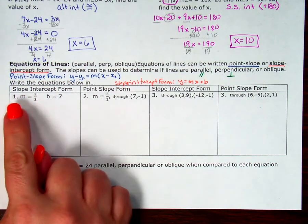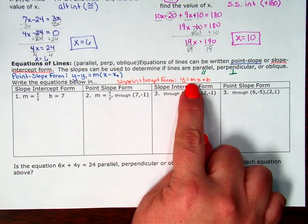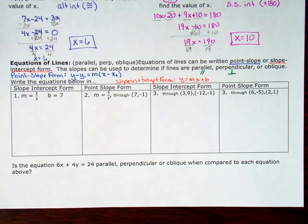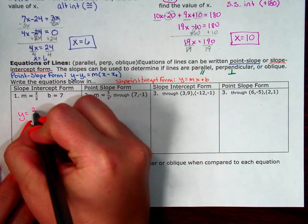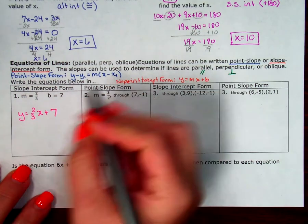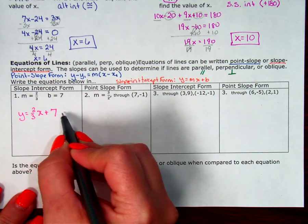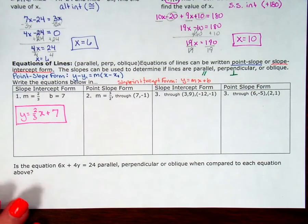For number one, they want me to write this in slope-intercept form, which is y equals mx plus b. What's great is they already gave me the m and the b, so all I have to do is fill it in: y equals two-thirds x plus 7. If b is negative, instead of writing plus a negative, I would just write minus that number. That's my first one, still in slope-intercept form.